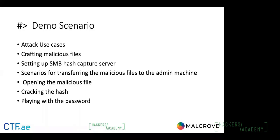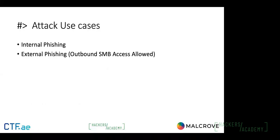The use cases for this attack include internal phishing — for example, in a red team engagement or pentest where you want to grab the hashes of the administrator or domain admin. You'd send a phishing email containing a malicious file that works internally. External phishing is possible if outbound SMB access is allowed, but that's very rare nowadays. Most cases will be internal phishing: once the target opens the file, you get the hashes of that host.